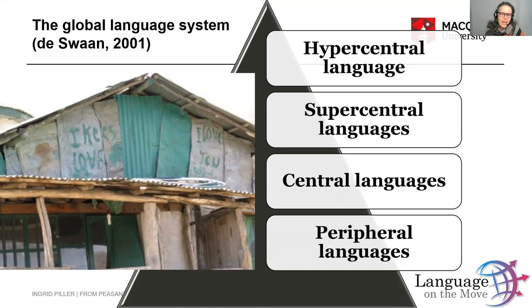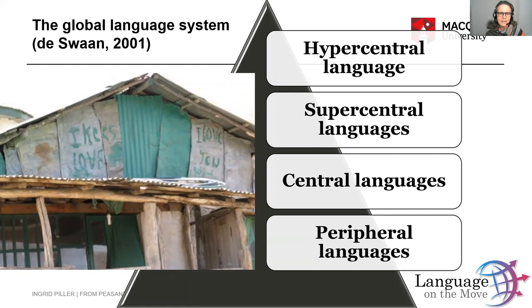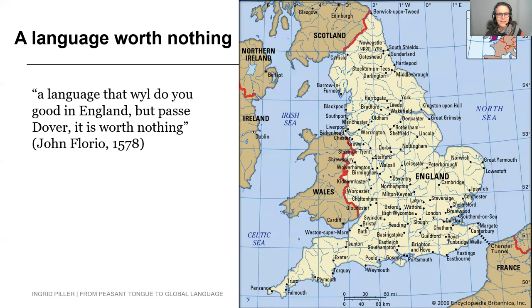English is ubiquitous wherever you are on this globe. And when we see that ubiquity of English and that overbearing dominant status as the hyper central single language on top of the pyramid, it is easy to forget that not so long ago, English actually was at the very bottom of the pyramid — a peripheral language and a peasant tongue.